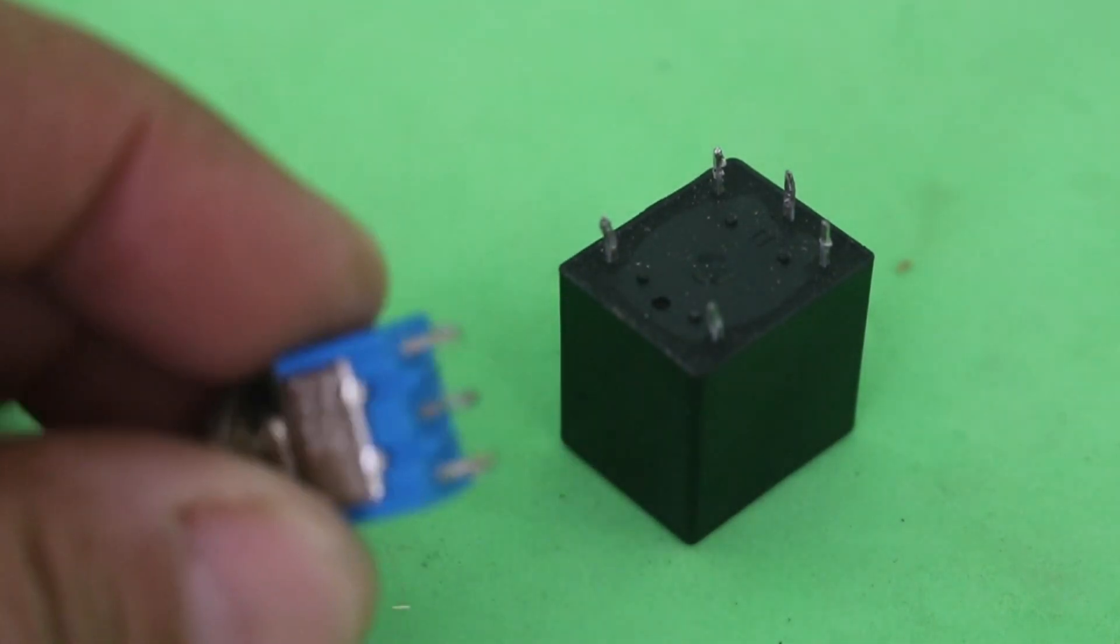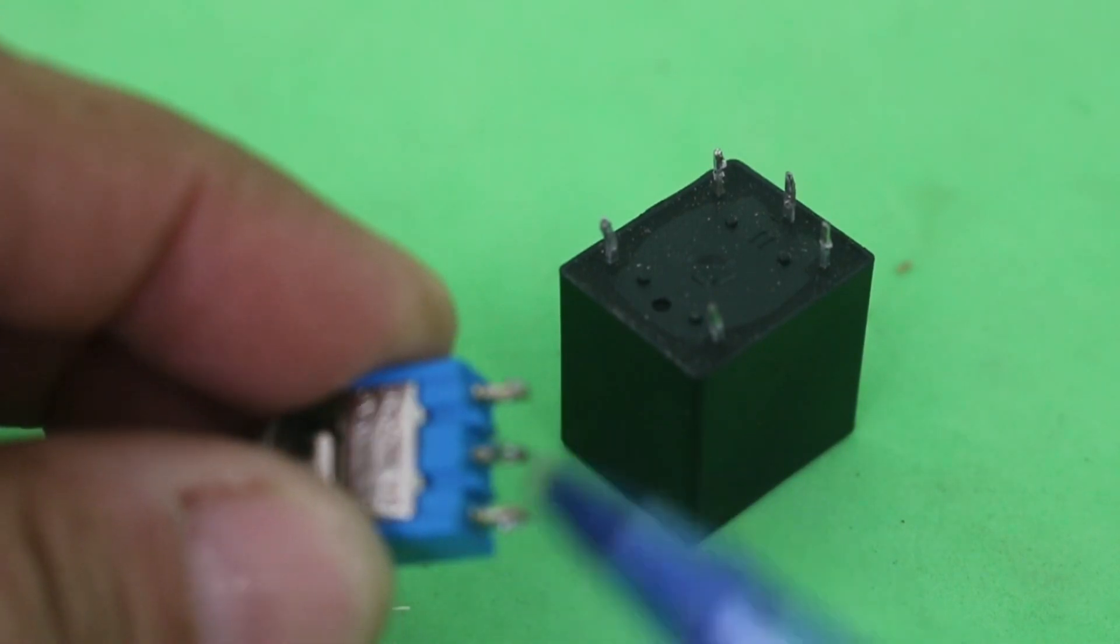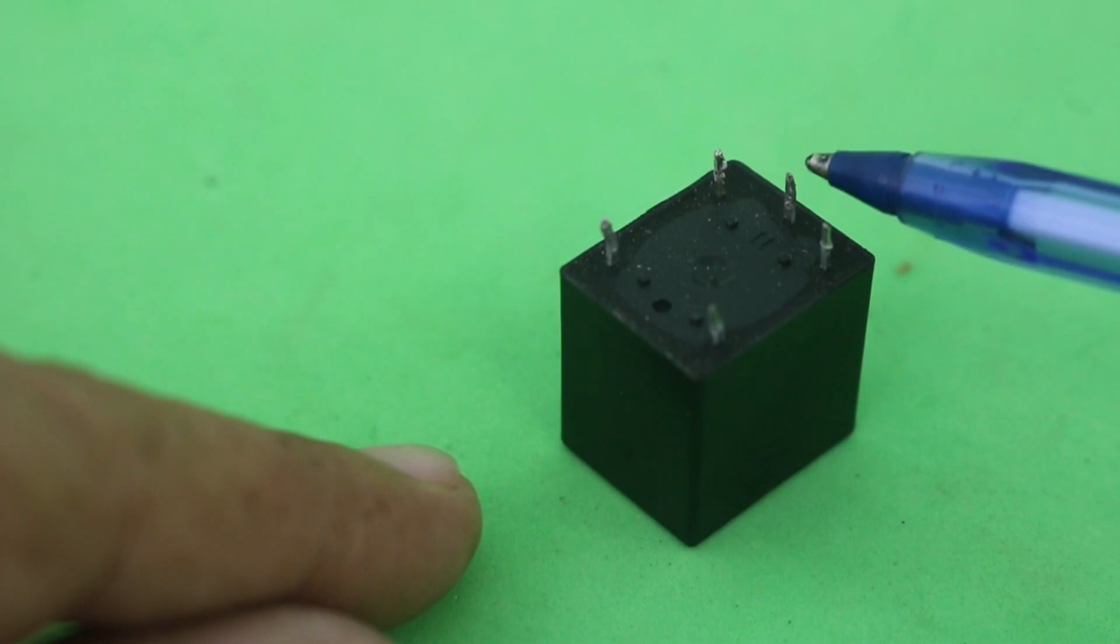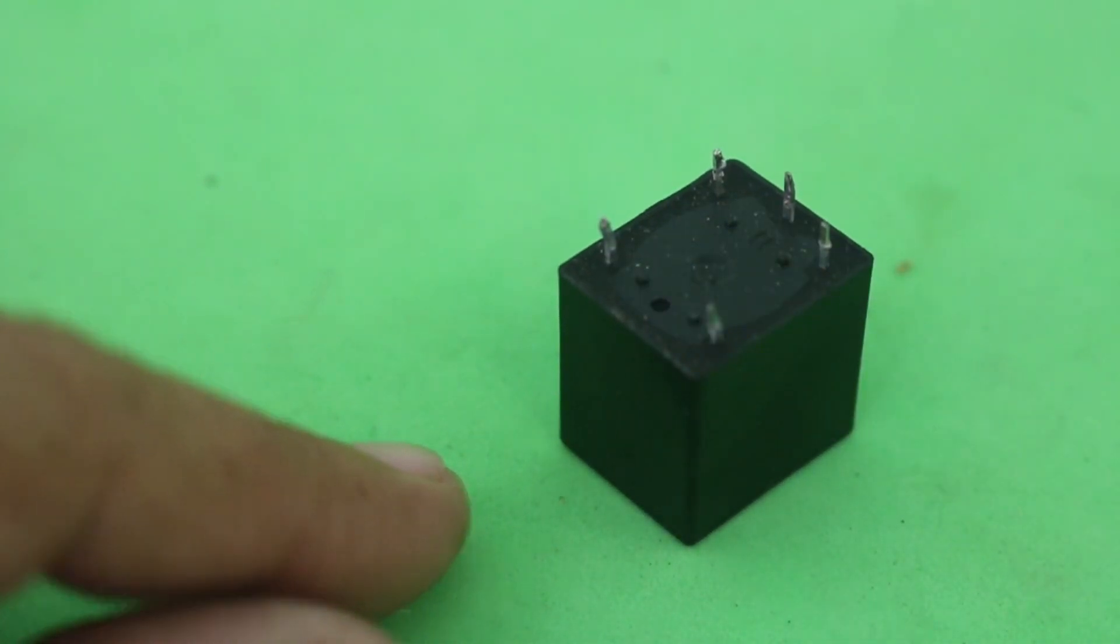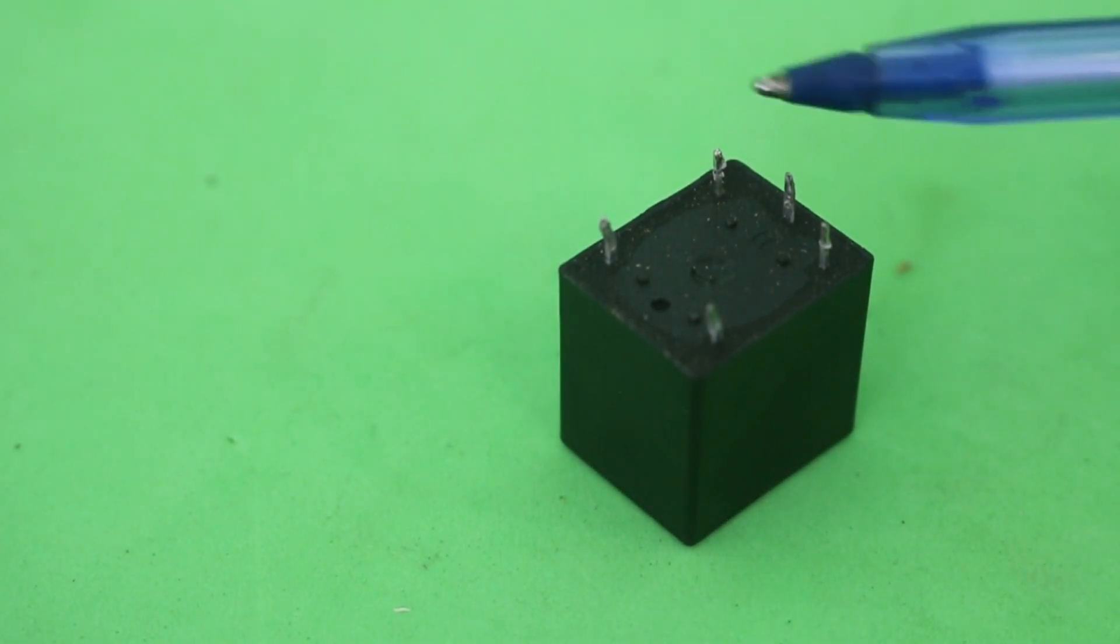Using switches, we have the common and the two contacts, and also in a relay you have the common contacts and the other two. And you need to connect the coil of both relays in parallel.